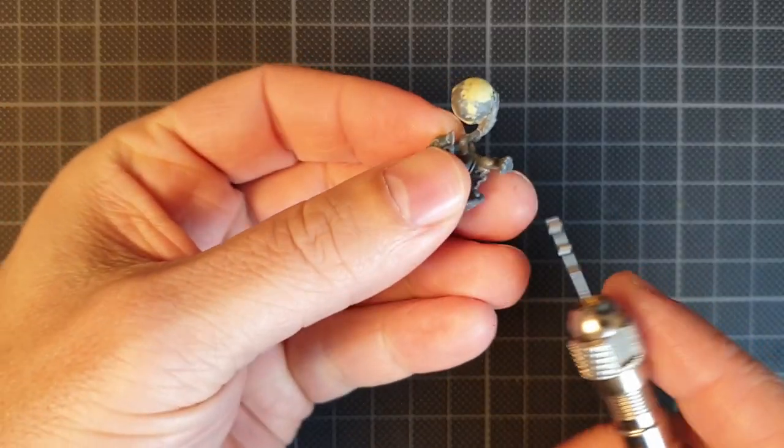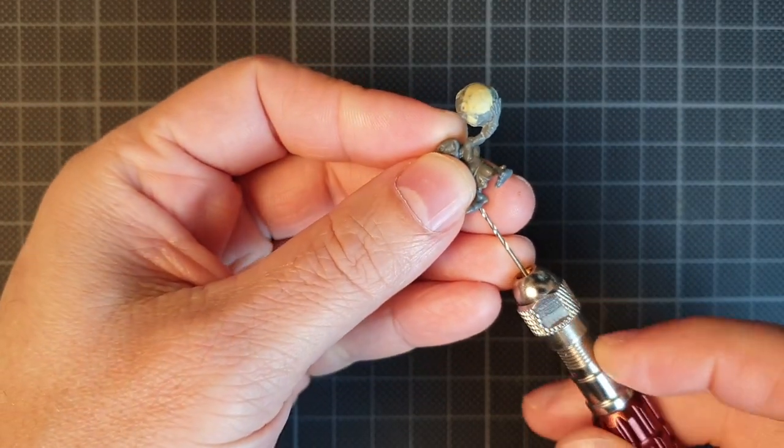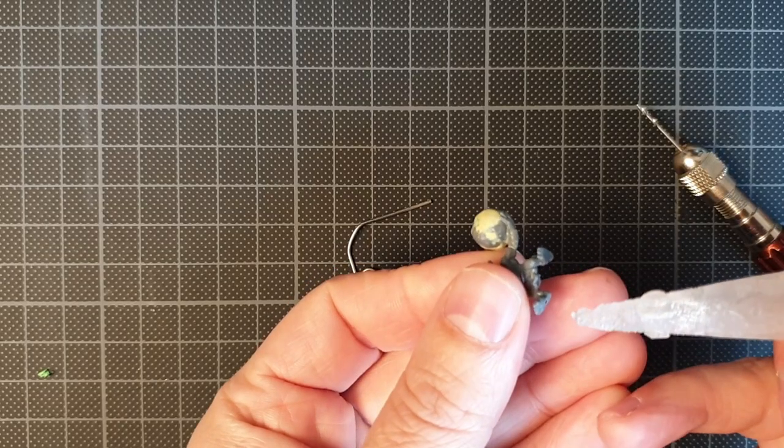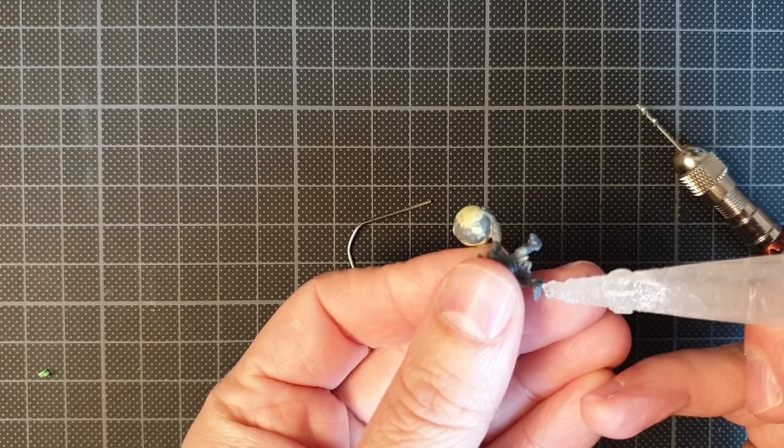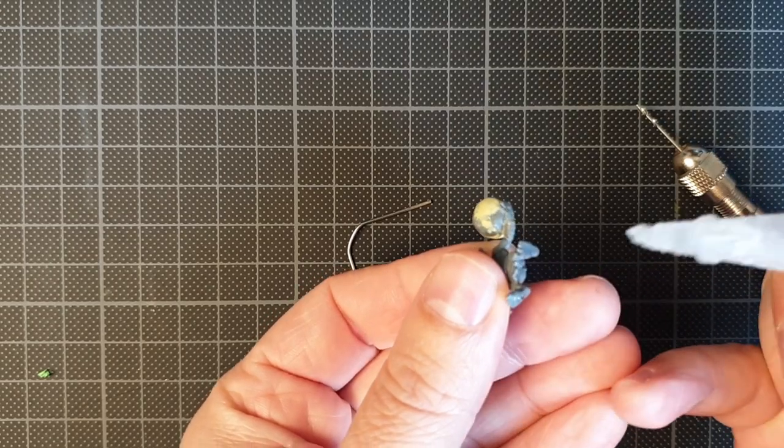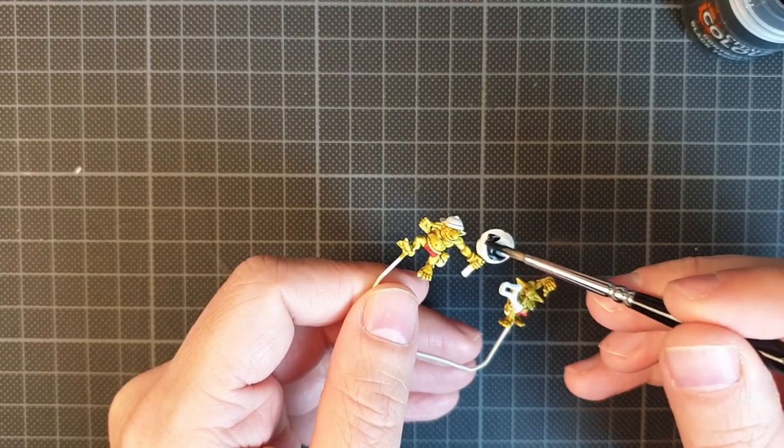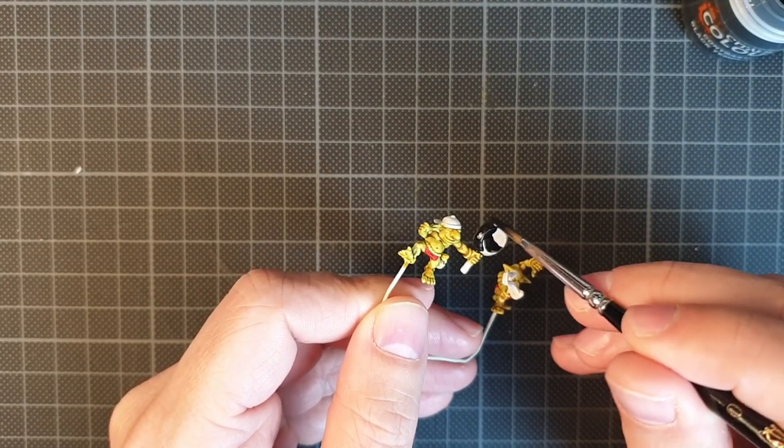I then proceeded to pin the minis by drilling a 1mm hole in their feet, adding some superglue, and sticking a paperclip in the hole. I did this so I had something to hold on to while I was painting the minis, because they're really tiny. And eventually, I used the pin to stick them to the diorama.